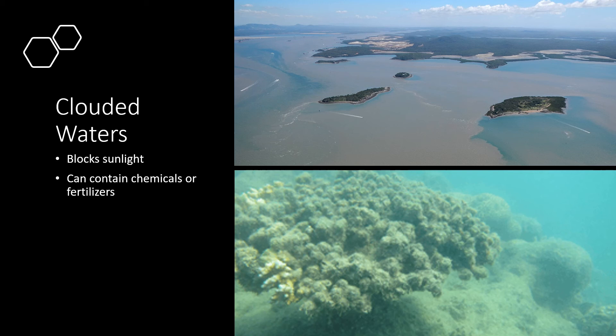So where does the sediment come from and why is it becoming a bigger problem now? Scientists believe it has to do with humans. When people build houses, towns, and start farming, they till the land and create more loose sediment. As they cut down trees, roots can no longer hold the soil together. This loosened sediment combined with increasingly unpredictable weather due to climate change allows for more storms, floods, and therefore runoff to accumulate in the ocean.